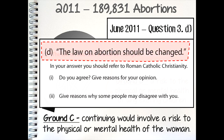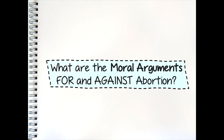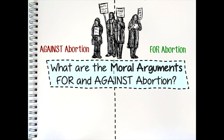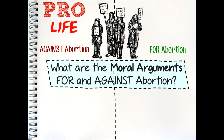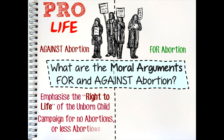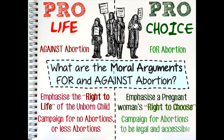Having established what abortion is, what are the moral arguments in favour and against it? Abortion is a very controversial and sensitive topic. In countries like the USA and Ireland, it has generated significant political attention and strongly held views on both sides. Those who are against abortion are called pro-life, as they emphasise the right to life of the unborn child, and tend to argue for a complete ban or stricter rules. Those in favour of abortion laws are called pro-choice, as they emphasise the right of the pregnant woman to choose what happens to her body, and campaign for abortion to be accessible to all women.